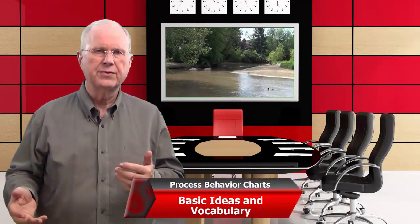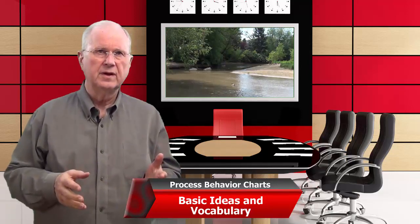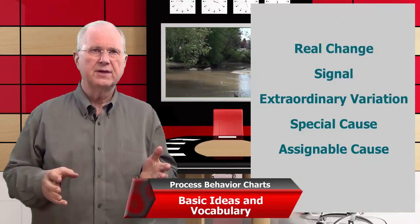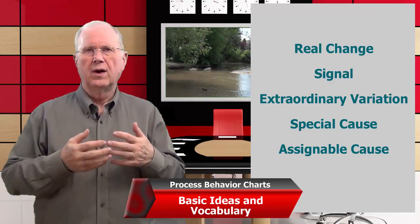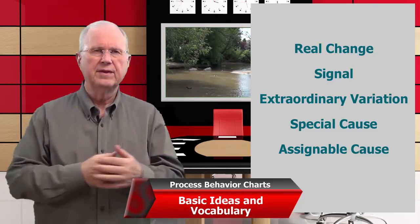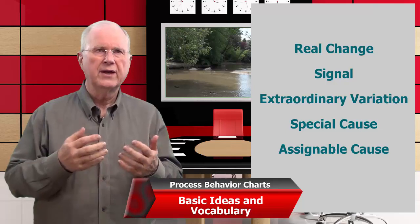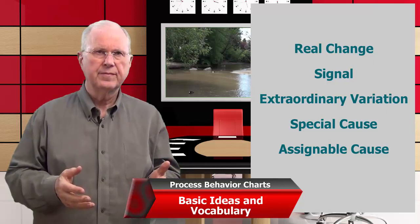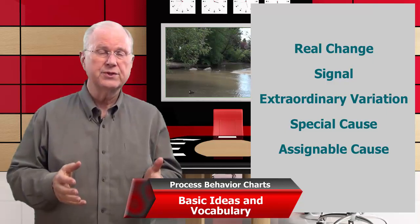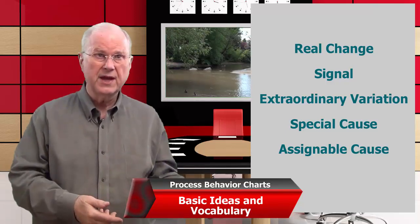Let's spend a couple of minutes on some basic ideas that we will use throughout the rest of this module. There are a couple of different kinds of variation. One is real change in the process — somebody adjusted the machine, changed the process, or there was a huge weather event that interrupted things. We call that signal, or extraordinary variation, or special cause, or assignable cause. Real change is potentially interesting and worth understanding. It's the voice of the process signaling that something has happened.